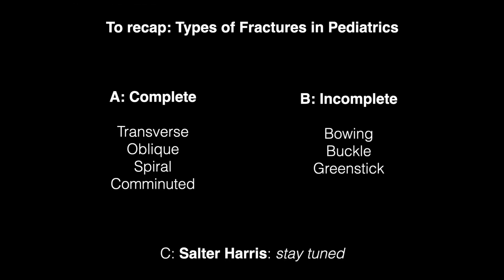So to recap, there's both complete and incomplete fractures. Some examples of complete fractures are transverse fractures, oblique fractures, spiral fractures, comminuted fractures. And some examples of incomplete fractures, which are unique to pediatrics, are bowing fractures, buckle fractures, and greenstick fractures. You'll notice at the bottom of the slide, it refers to Salter-Harris fractures. We're going to discuss those in a subsequent video, so stay tuned.